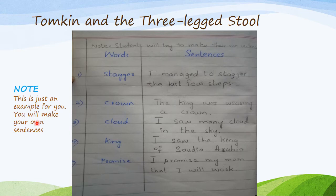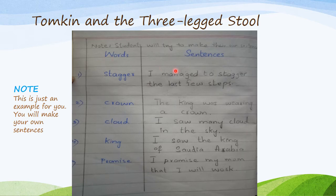First of all, you will write the name Tomkin and the Three-Legged Stool. Then you have to divide the page into two portions and draw a line. You will add words and add sentences. You will have five words which you have to use in your sentences. This is just an example for you to make sentences.